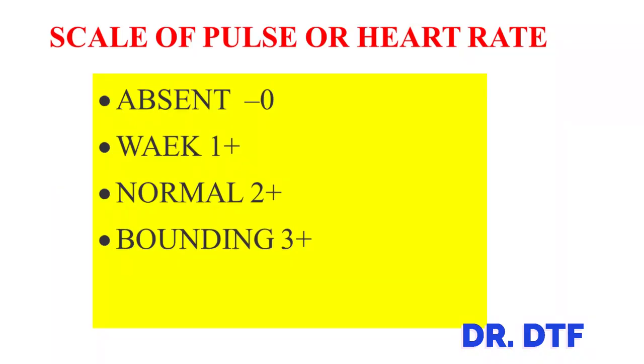How does one measure their pulse? Your pulse can be measured by firmly but gently pressing the first and second finger against specific locations on the body. Most commonly this is done at the wrist or the neck. There is a scale for this: if you have no pulse it's zero; if your pulse is weak it's one plus; if it's normal it's two plus; and if it's bounding it's three plus.